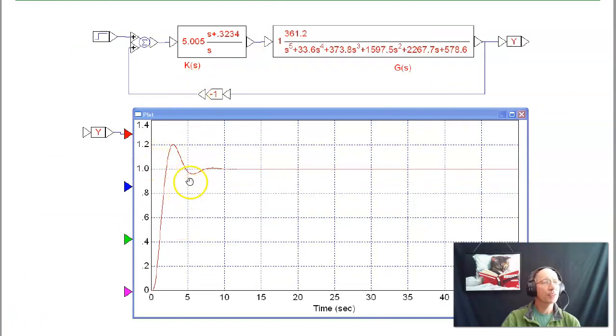In VisSim, I can simulate that, add that zero and what happens is instead of a 40 second settling time, I'm now down to 10 seconds. The little zero made a huge difference.